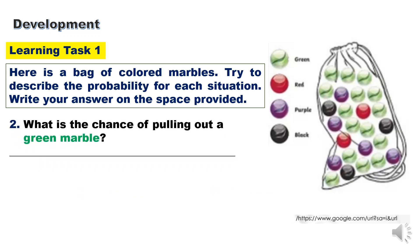Number 2: What is the chance of pulling out a green marble? There are 15 green marbles out of 25 marbles, so that is 0.60 or 60%, and that is most likely.